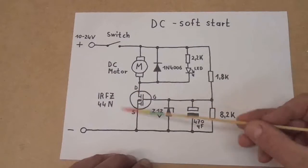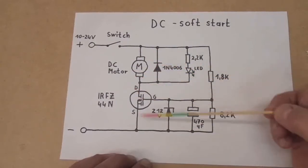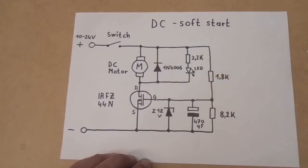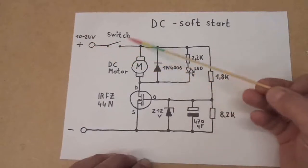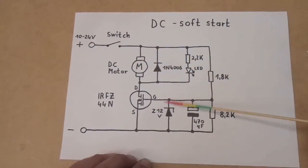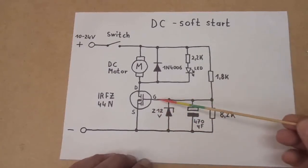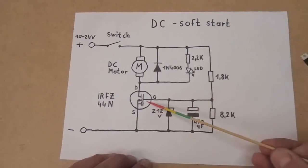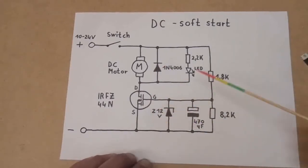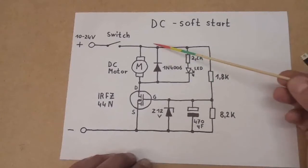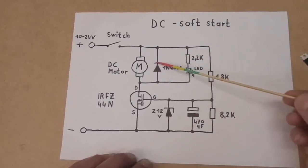And therefore the load does not get the full current. And after a couple of seconds the full VCC is reached here at the gate, or in this case the maximum, the 12 volts is reached here at the gate, and the MOSFET is fully turned on. As I said, I have here a protection diode which you need for inductive loads.